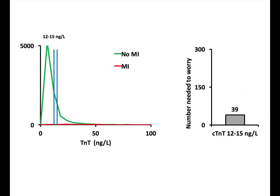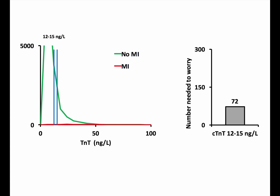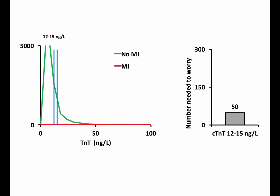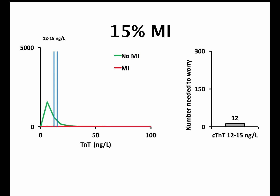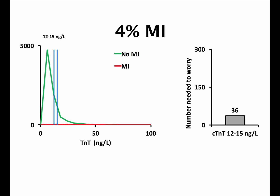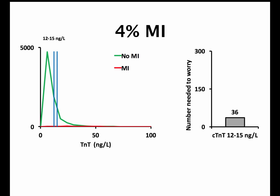Number needed to worry around 14 nanograms per liter is different in cohorts with different myocardial infarction prevalence. This is shown in this simulator using our dataset of 8,076 male chest pain patients. If the proportion without myocardial infarction increases — for instance if we were to analyze Troponin T on everyone at the emergency ward — number needed to worry around 14 nanograms per liter goes up. On the other hand, if the proportion of patients with myocardial infarction was 15% instead of 4%, for instance if we were to apply the calculation to the Apache study cohort, number needed to worry at 14 nanograms per liter goes down from 36 to 12. The take-home message is: how you use the Troponin T test affects its usability.